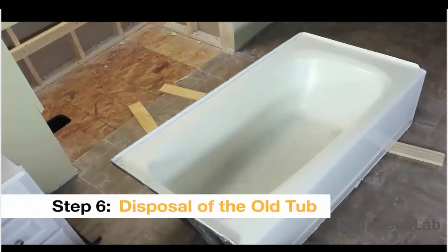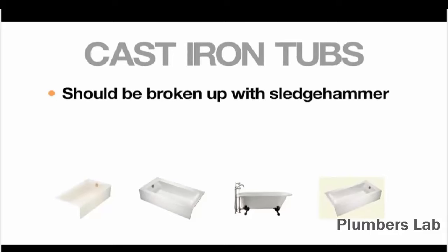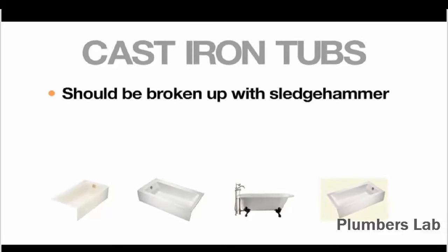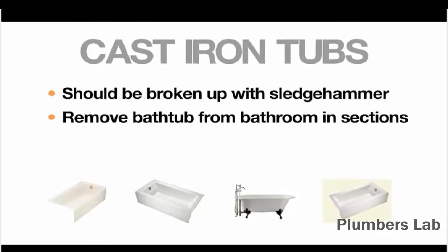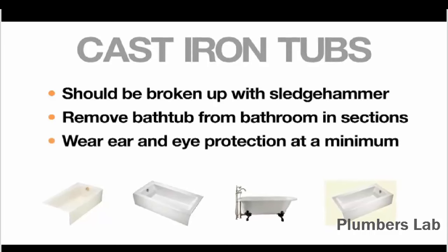How you dispose of the old tub will depend upon the type it is. Cast iron tubs should be broken up with a sledgehammer. Because of the sheer weight, you'll want to do this in the bathroom so you can remove it in sections. And because the pieces can be sharp, you'll need to wear ear and eye protection at a minimum.